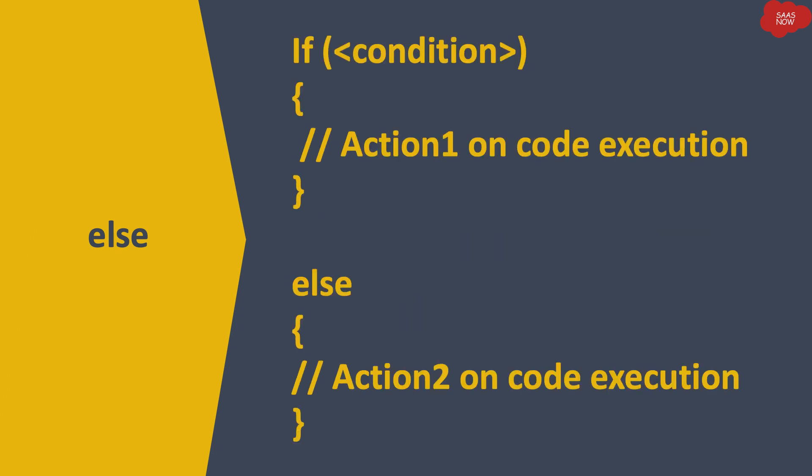If you write if and else together, the code will look like this: first, code will be executed if the condition is true. So if condition one is true, action one will be taken — meaning the code written in action one will execute. If that condition is not true, then the else statement will run and the code in action two will be executed.